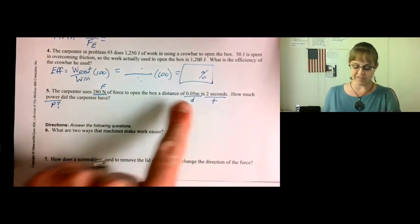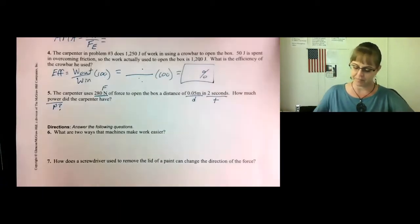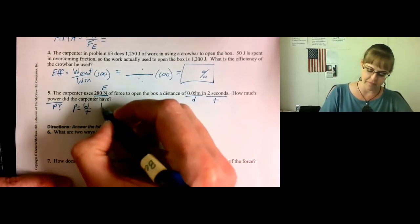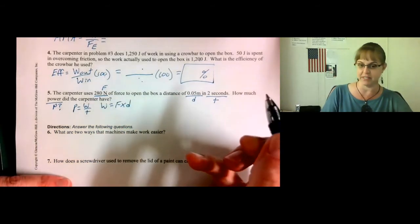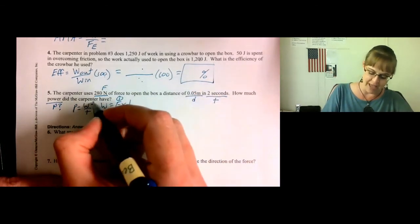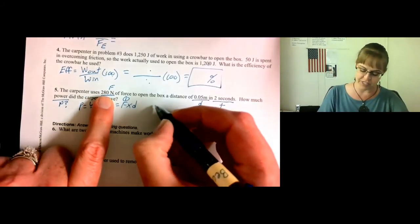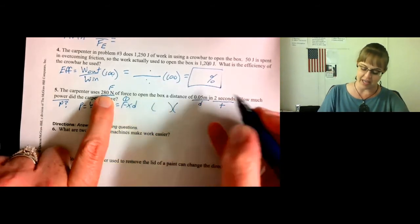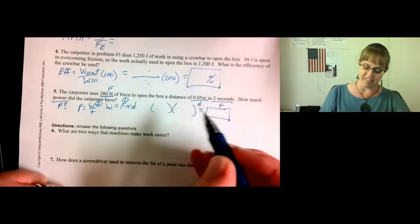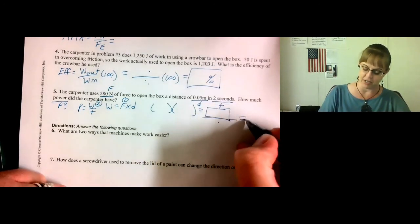Well, is there a formula with force and distance? Yes, there is. Work equals force times distance. So, power is work per time, and work is force times distance. So first we'll have to use this formula, then we'll go back and use this formula. So, work equals force times distance. We were given the force, 280, times the distance, 0.05, and that gives us the work. Then, work divided by time. Take your work, divide it by your time of two seconds, do your math, and that will give you your power.